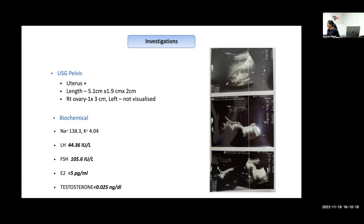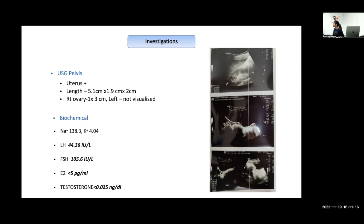Comparing to the CAIS case in this series: in CAIS, AMH was very high, testosterone was high, LH was slightly high, estradiol was normal, and FSH was around 2 — consistent with functional Sertoli and Leydig cells. In this current case, there is no testosterone, no estrogen, no inhibin, and a very high FSH — indicating complete gonadal failure with no steroidogenic or inhibin production at all, pointing strongly toward gonadal dysgenesis rather than a biosynthetic defect.